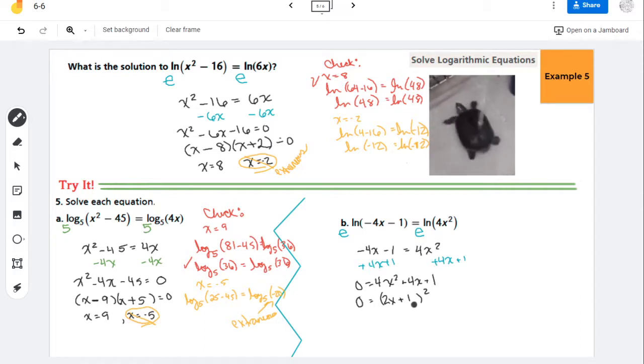And so now when I go to solve for this, I need to get rid of this square by taking the square root of each side. Now remember, any time you take a square root, you have to put a plus or minus. But in this case, it doesn't actually matter because the square root of 0 is 0. And if you add or subtract 0, it doesn't matter. So I get 0 = 2x + 1.